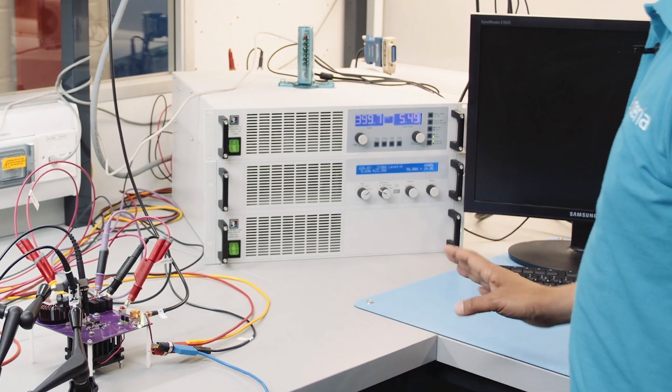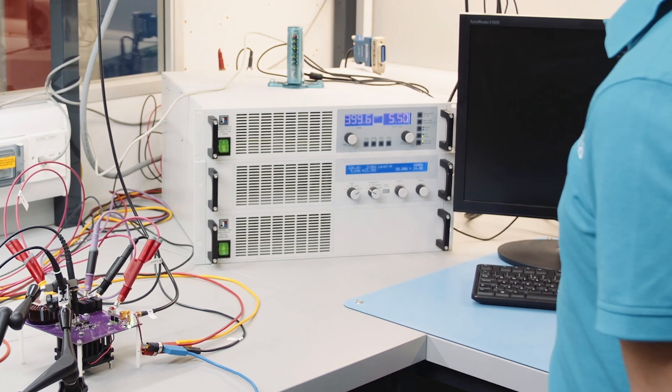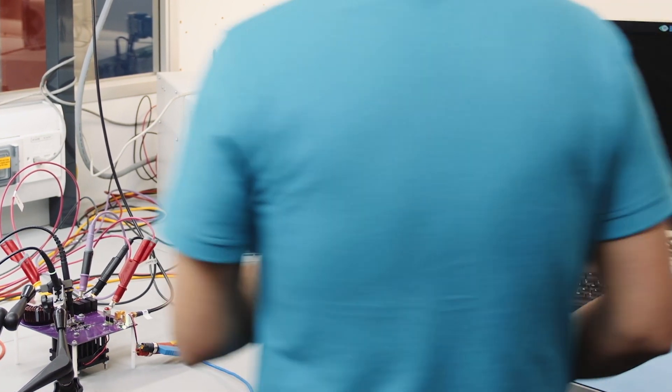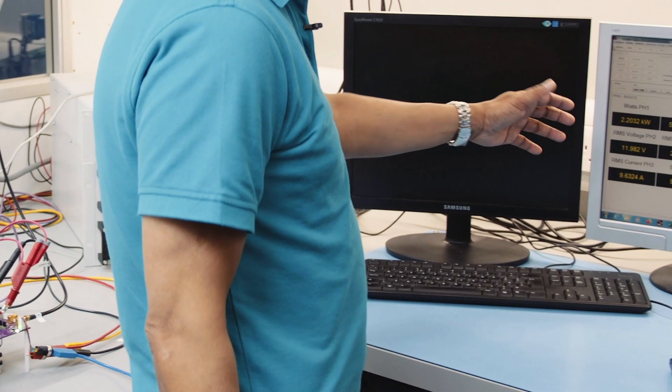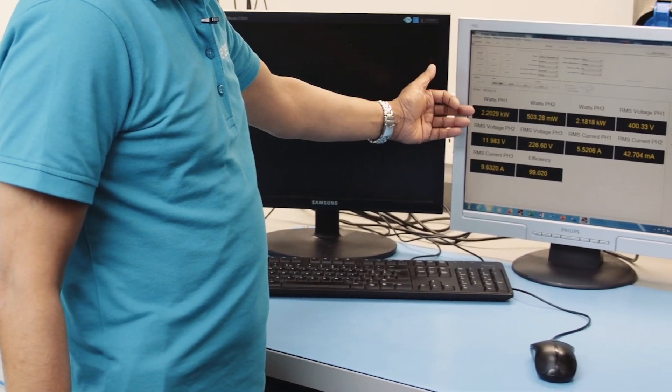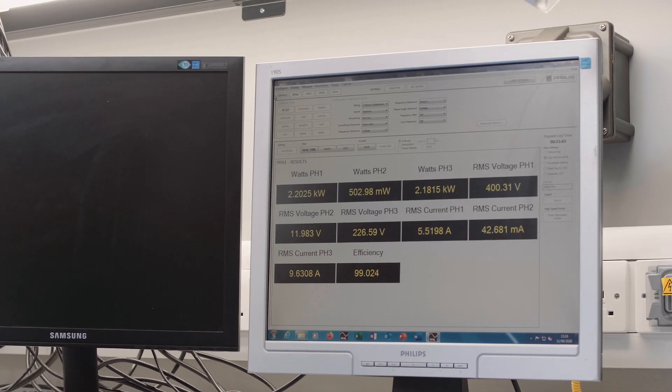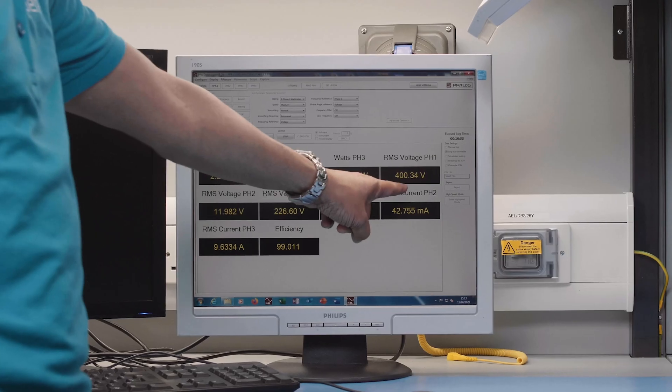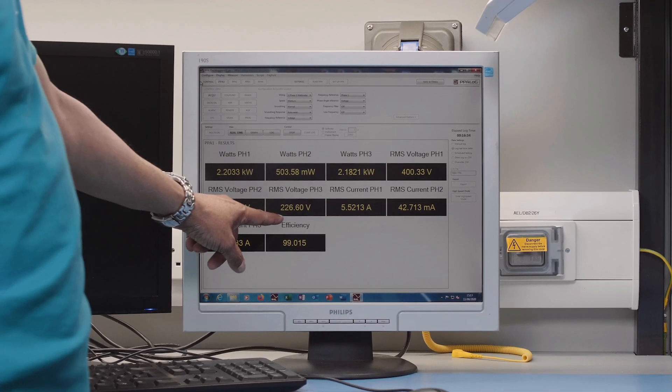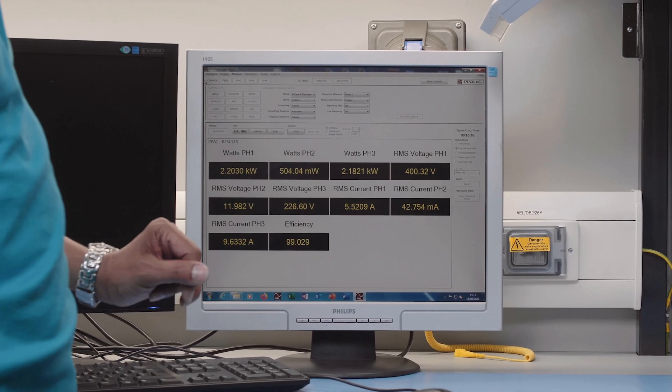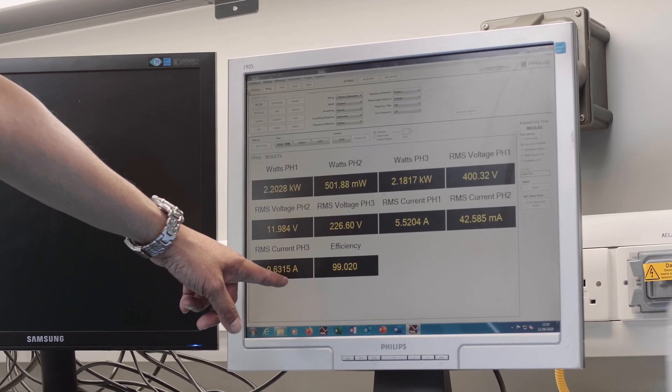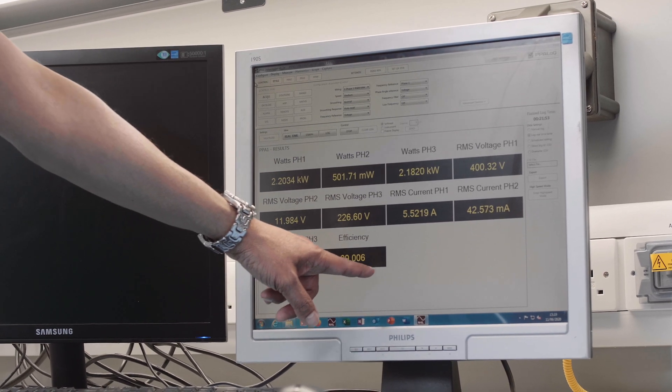This one is actually giving us the efficiency trace. We can look into this screen. You can see that there is a 2.2 kilowatt input and almost 2.2 kilowatt output with the 400 volt input and 226.6 volt output. So this is the battery load with 9.6 amps and offering 99% efficiency.